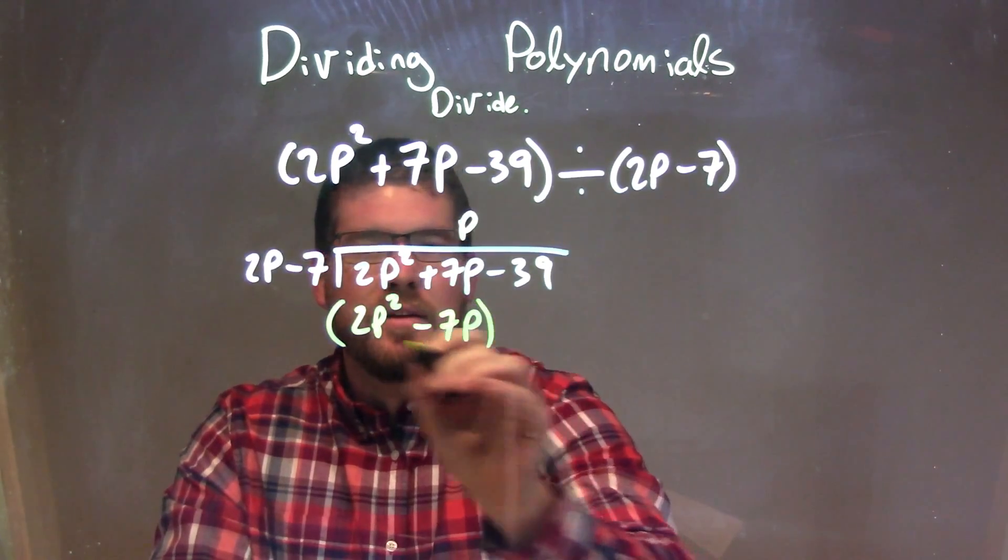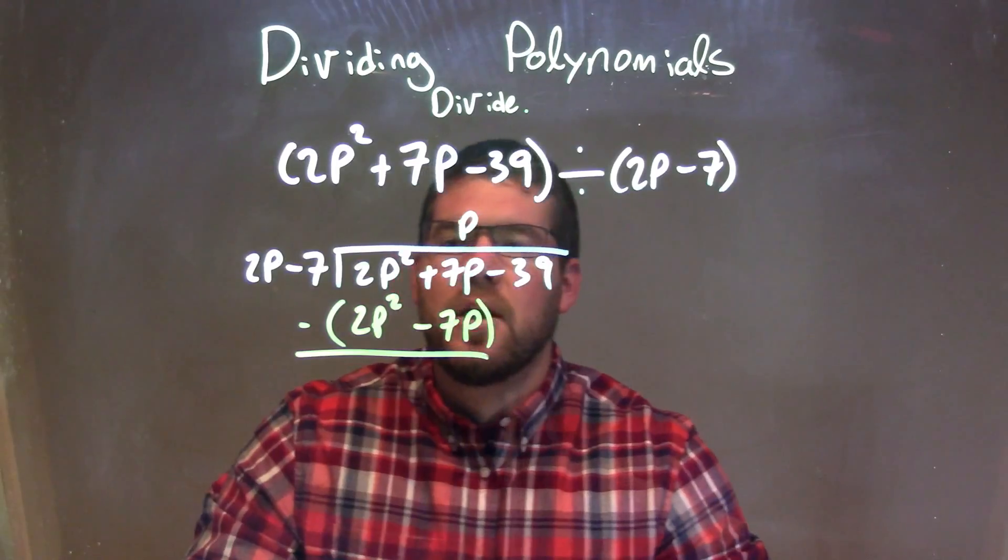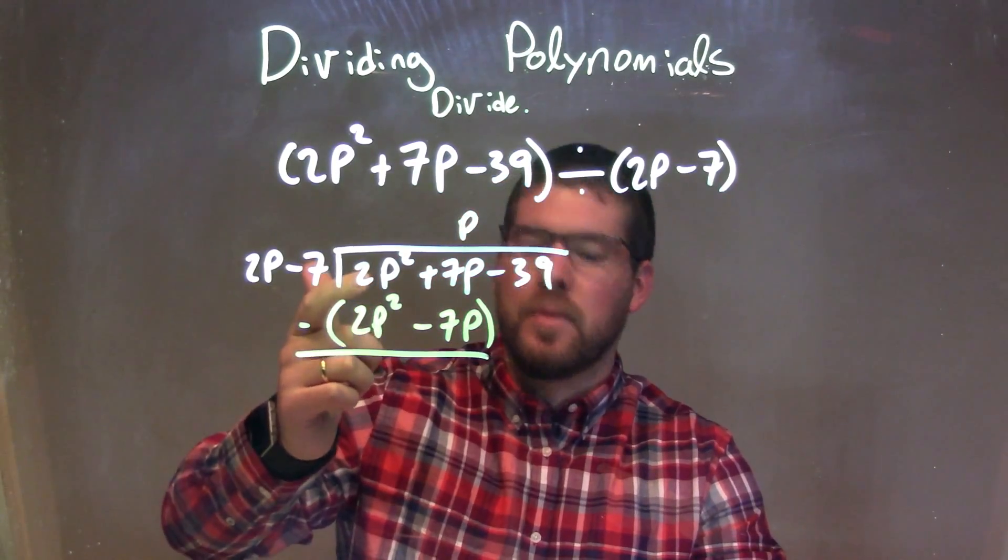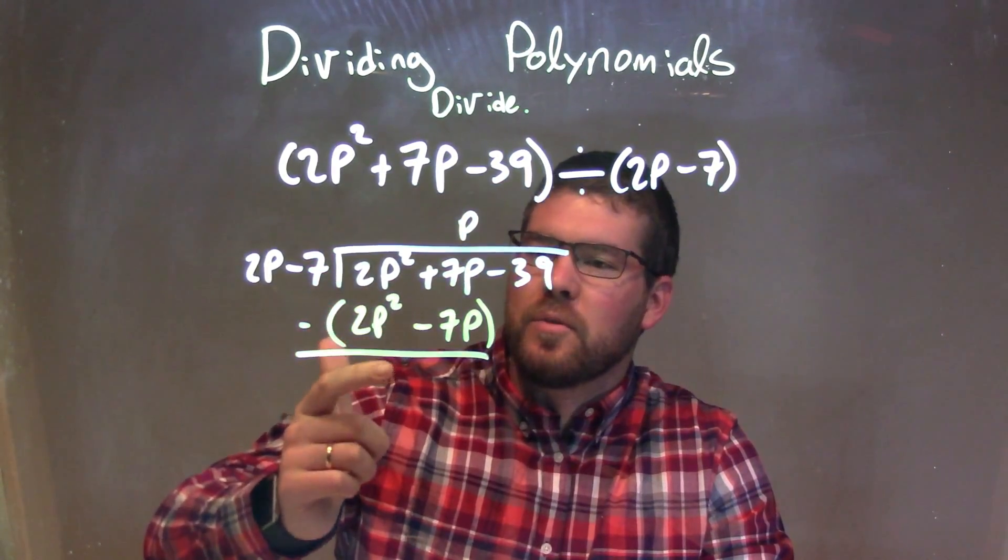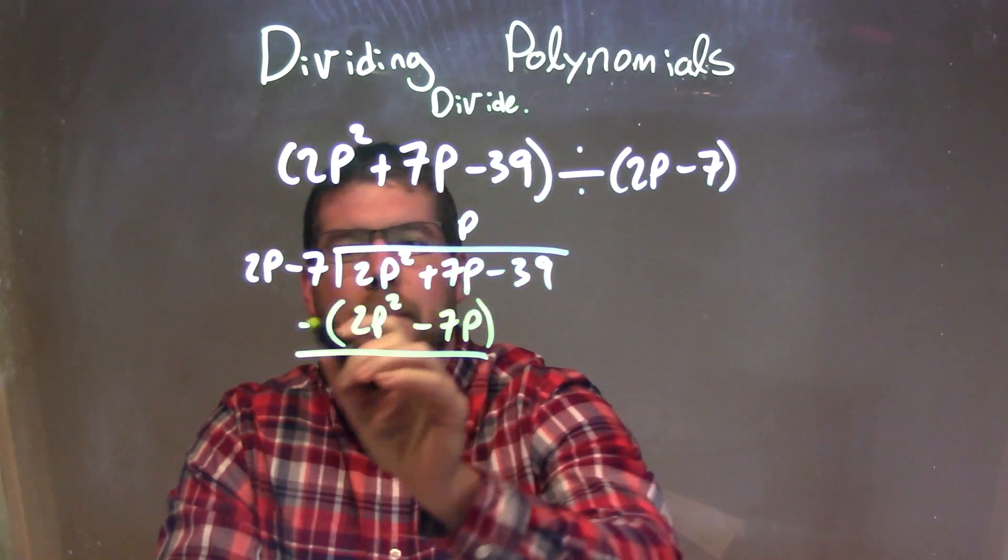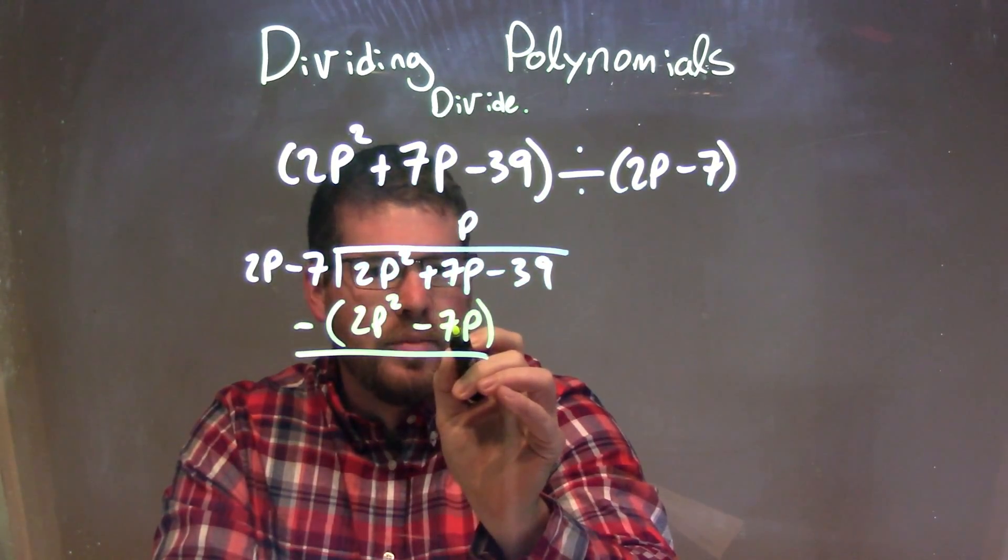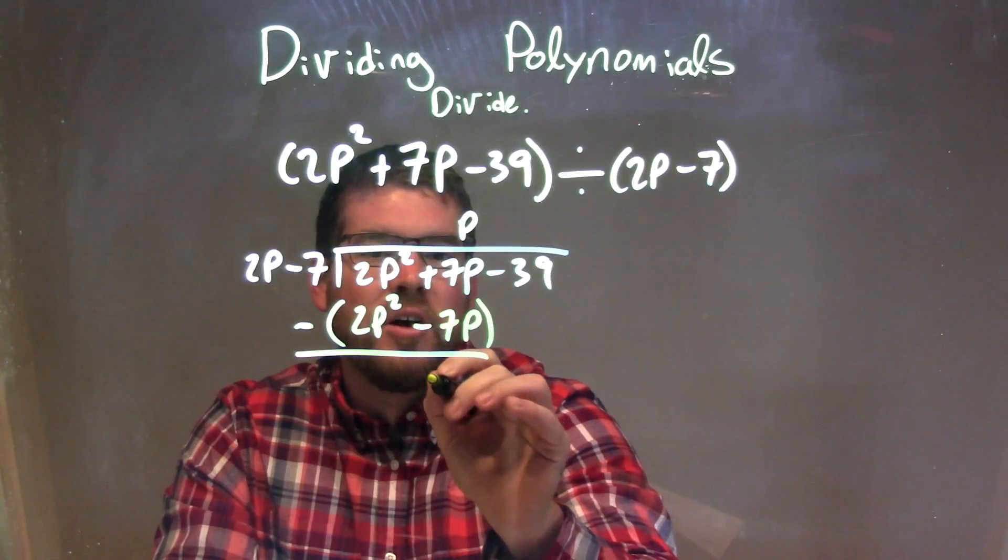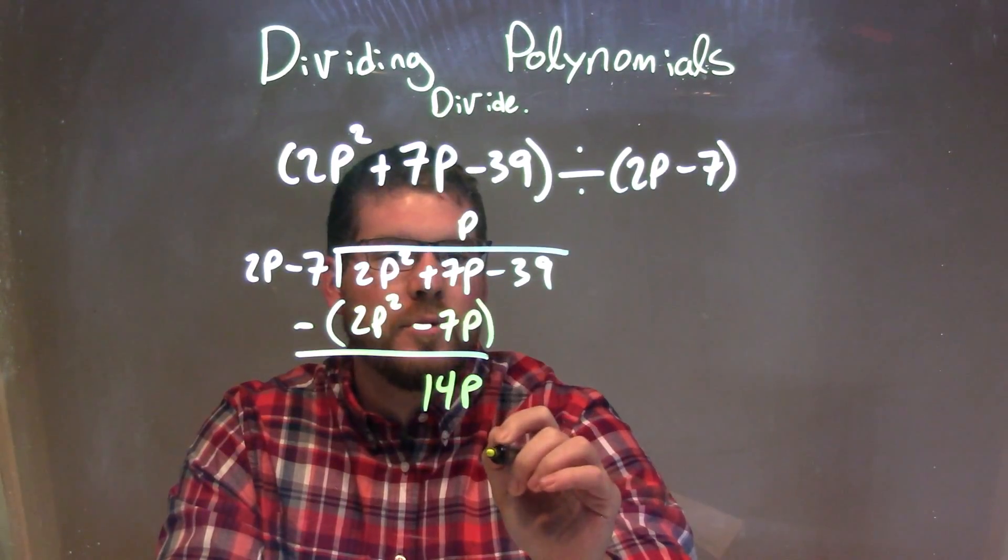We subtract the two. And so we have 2p squared minus 2p squared is 0. And then 7p minus a negative 7p is like adding a positive 7p, gives us our 14p, a positive 14p.